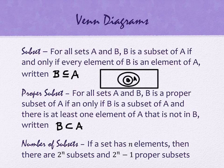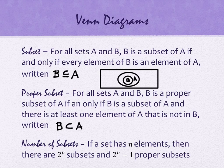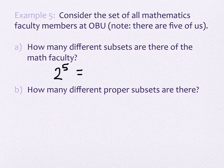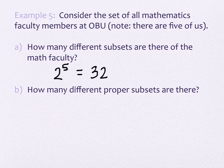For the number of subsets: if a set has N elements, there are 2 to the N subsets, and 2 to the N minus 1 proper subsets — notice the minus one is beside the expression, not in the exponent. There are five faculty members in the math department. How many subsets? Two to the fifth is 32. How many proper subsets? That's just one less: 31.